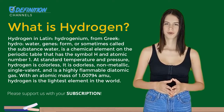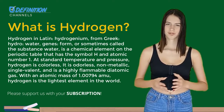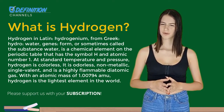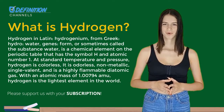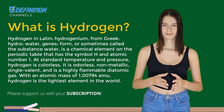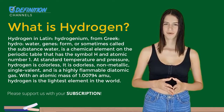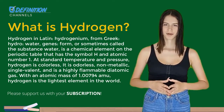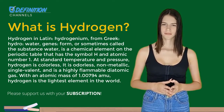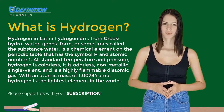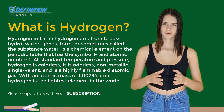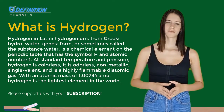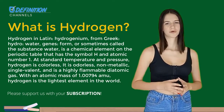Hydrogen is a chemical element on the periodic table that has the symbol H and atomic number 1. At standard temperature and pressure, Hydrogen is colorless, odorless, non-metallic, single-valent, and is a highly flammable diatomic gas. With an atomic mass of 1.794, Hydrogen is the lightest element in the world, and also the most abundant element at approximately 75% of the total elemental mass of the universe.